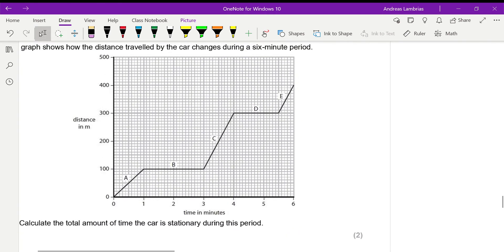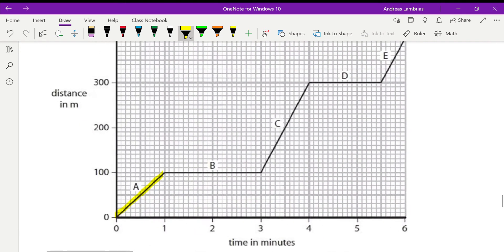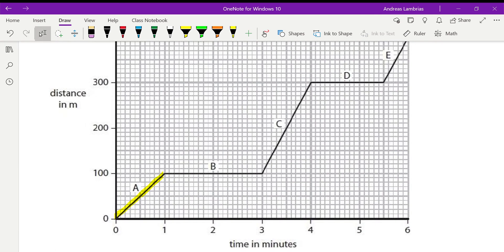On a distance-time graph the diagonal line shows that the car is moving at a constant speed. There's a couple of ways to explain why this is the case.